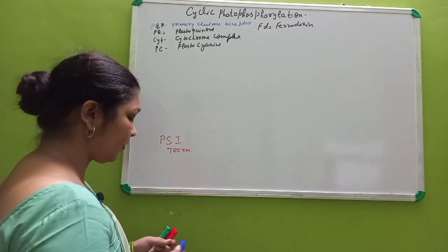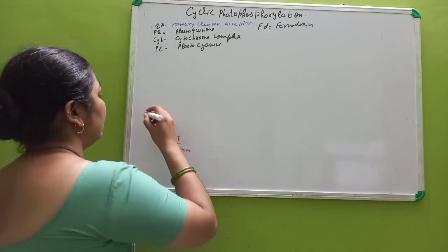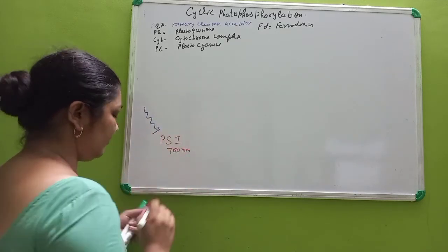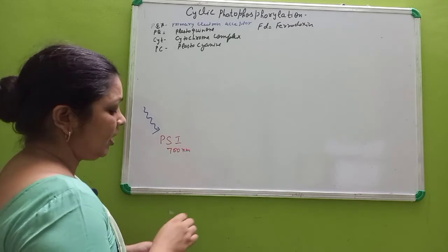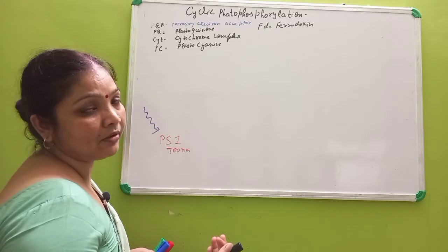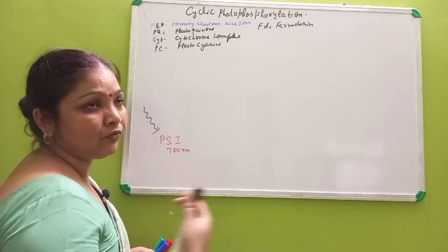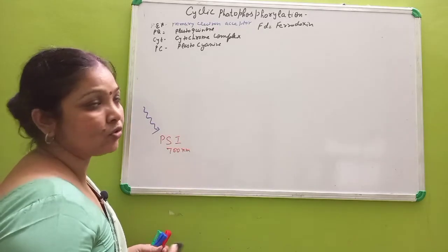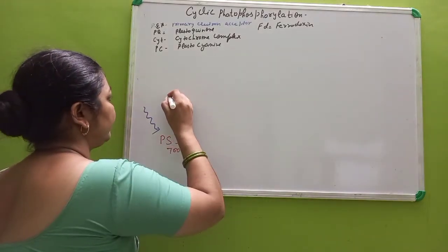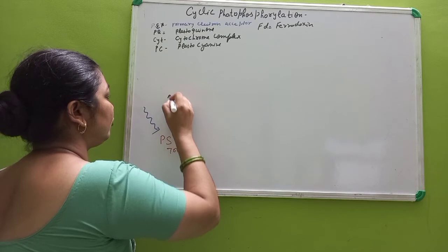Now what happens here? The electron gets absorbed by the photosystem, as it was absorbed by the previous center, that is by the photosystem or by the quantosome. Then the electron gets excited, a pair of electrons get excited.